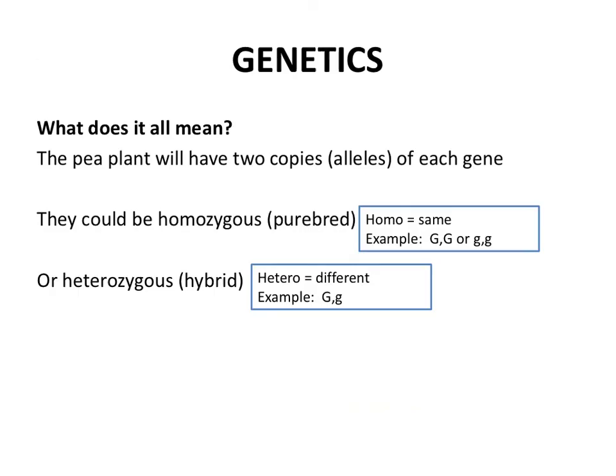Pea plants are flowering plants that reproduce sexually, which means there has to be a combination of genetic material — one flower has to be pollinated by another. Pea plants will always get two copies of each gene, one from each parent plant. There are two ways to combine these: you can combine them as homozygous, which means this prefix means 'same.' They inherit the same type of gene from each parent — either dominant from both or recessive from both. That's referred to as homozygous, and another name for it is purebred.